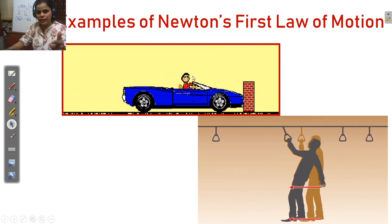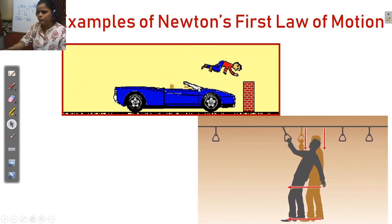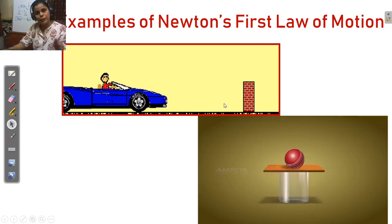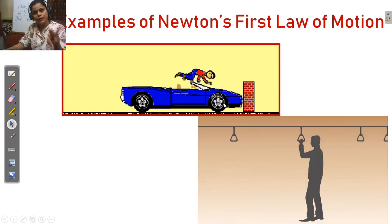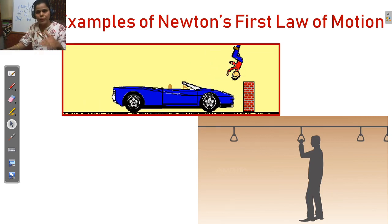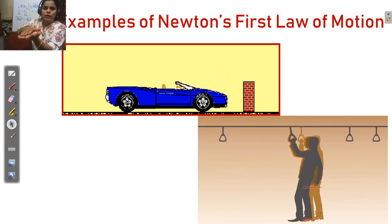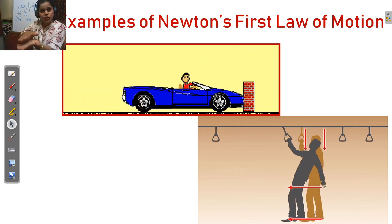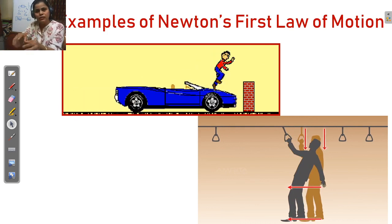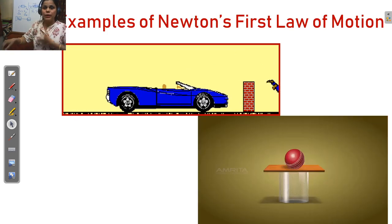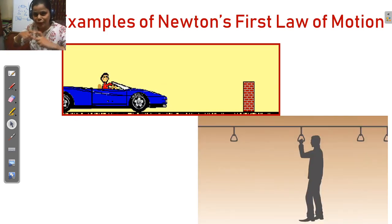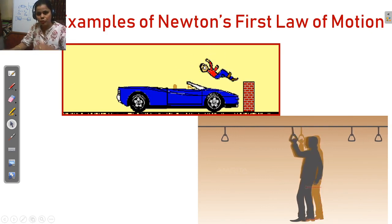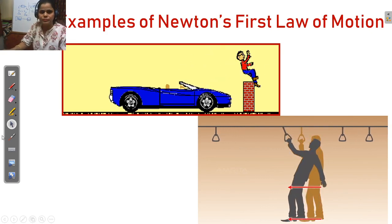In this case the car is in motion. When an obstacle appears in front, the person applies the brakes. The body part in contact with the seat comes to rest after braking, but the upper body part continues moving forward — so this person falls to the front side.